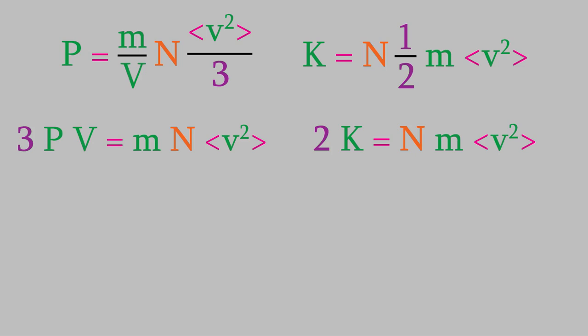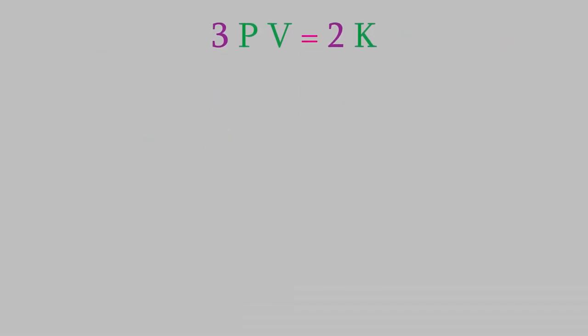Let's move everything else to the left side of each equation. That leaves 3PV on the left for the first equation, and 2K on the left for the second. Since the right sides are the same, we can set them equal: 2K = 3PV. Notice what we just did — we got rid of both the velocity and n, the number of particles, both of which would have been very hard to measure. Instead, now we just have P, V, and K. P and V are really easy to measure, and we can rearrange the equation to solve for K, giving us an equation for kinetic energy that's pretty easy to use.